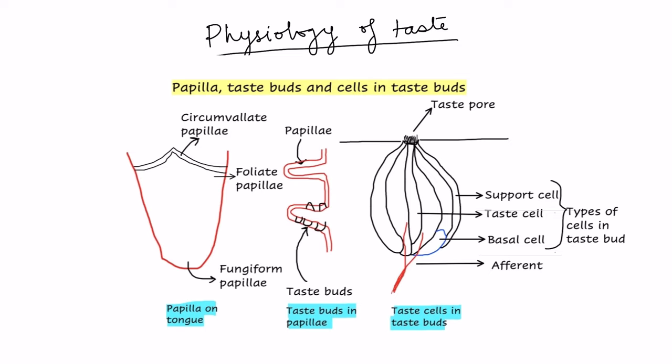So how do we detect this taste sensation? Taste sensation is detected by certain cells known as taste cells, which are present in taste buds, and these taste buds are in turn located on the papillae, which are present on the dorsal surface of the tongue.